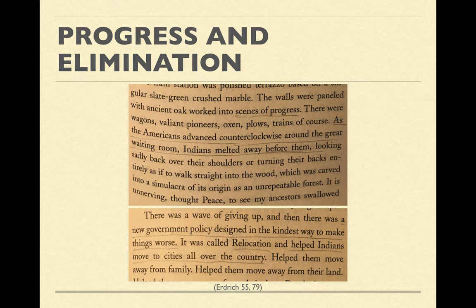There's a scene where Augustus Roy is in a train station and sees walls paneled with scenes of progress: 'There were wagons, valiant pioneers, oxen, plows, trains — as the Americans advanced counterclockwise around the great waiting room, Indians melted away before them, looking sadly back over their shoulders.' Progress is the ideology that has dispossessed Native Americans because it treats everything it can't assimilate as merely backward — progress and elimination go hand in hand.